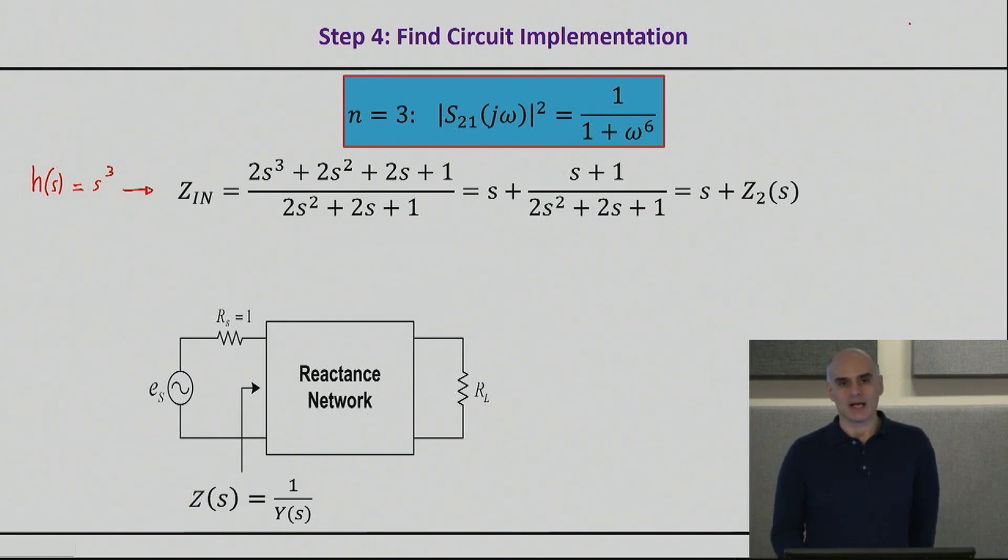Now here we have to basically start progressing step-by-step, because what we realize is that we have to implement this transfer function, and the numerator is one degree higher than the denominator. So I can actually divide the two polynomials, and I will basically have S plus this polynomial here, or S plus another impedance Z2.